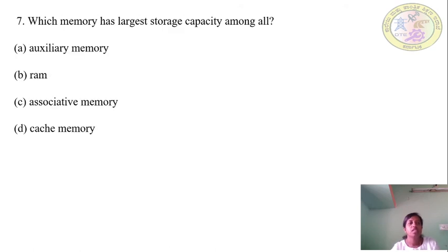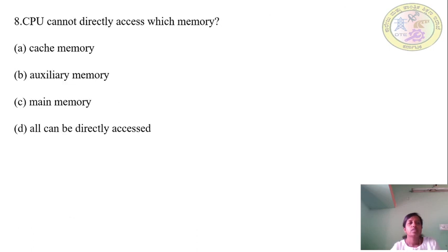Question 7: Which memory has the largest storage capacity among all? Answer: A — Auxiliary memory. Question 8: CPU cannot directly access which memory? Answer: B — Auxiliary memory. From this type of memory, data cannot be accessed directly by the CPU.